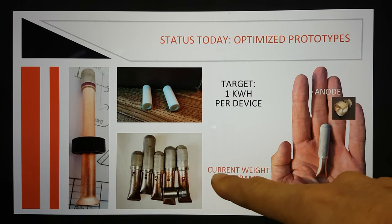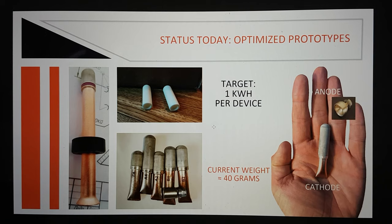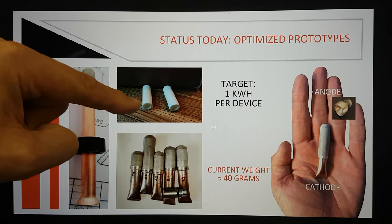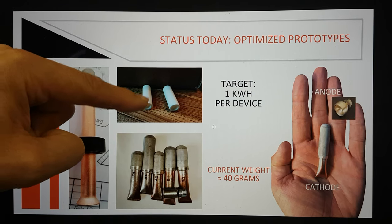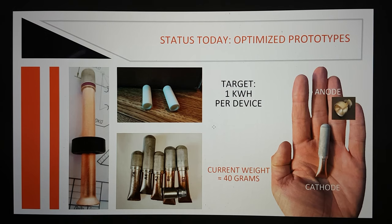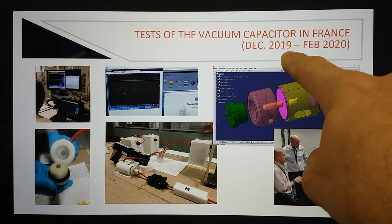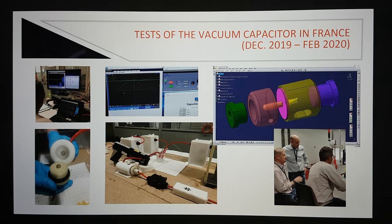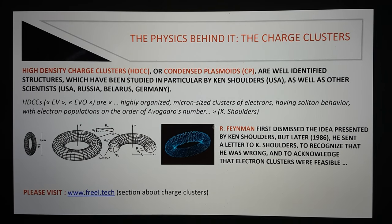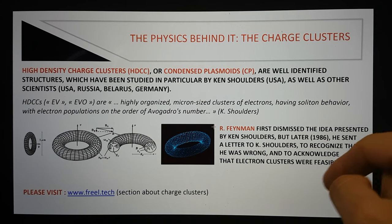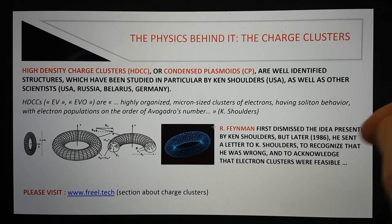These are some tests, I guess. What they're saying here is this is their current device. It has a cathode and an anode and the current weight is 40 grams and they target one kilowatt per device. This is the ceramic single-ended tube. I would suggest that this is boron nitride if it's going to be one that has the heater element within it. If it doesn't, then it's less important from that point of view. Here's some more of the charge cluster details. It's talking about the fact that Feynman first dismissed Ken Shoulders' idea. But in 1986, he sent a letter to Ken Shoulders to recognize that Feynman was wrong and that electron clusters were feasible.